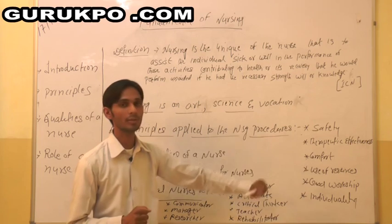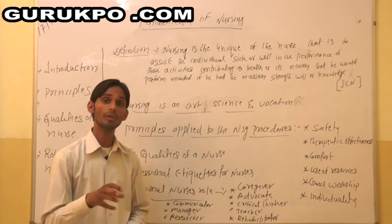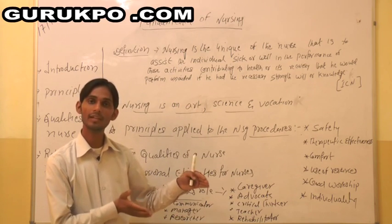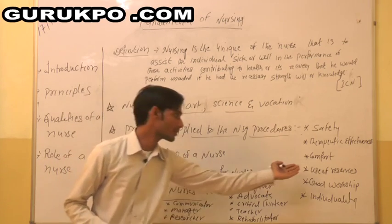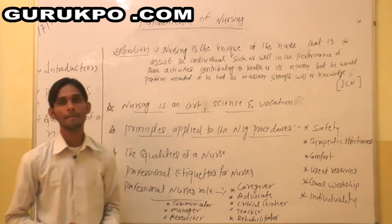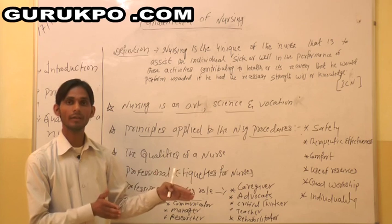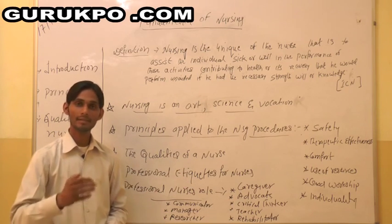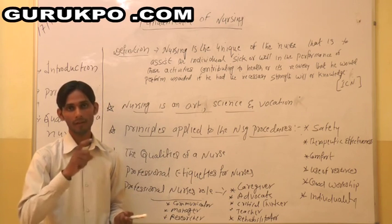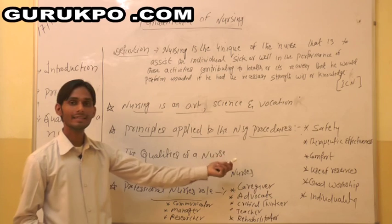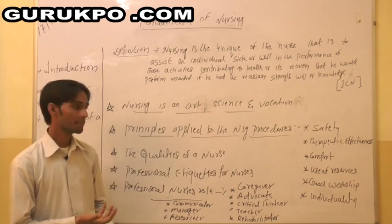Next, therapeutic effectiveness — whatever procedures we are going to do, what is the purpose, and whether it is effective for the client or not. This principle should also be applied in the nursing procedure. Next is comfort — while the client is in the hospital, we should look for the comfort of the client. He has to slowly recover, and we have to assess his general condition, provide a comfortable bed, position, and everything for the client.